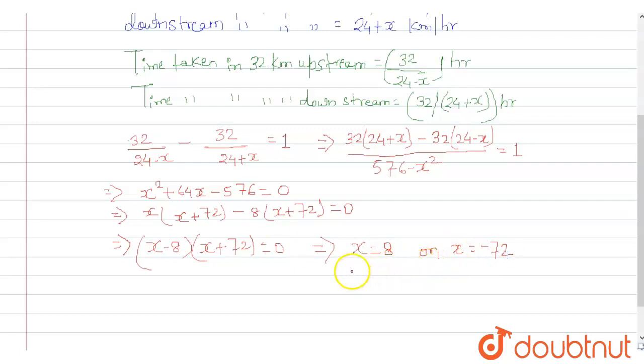Since x represents speed, the value of x is 8 kilometers per hour. Therefore, the speed of the stream is 8 kilometers per hour.